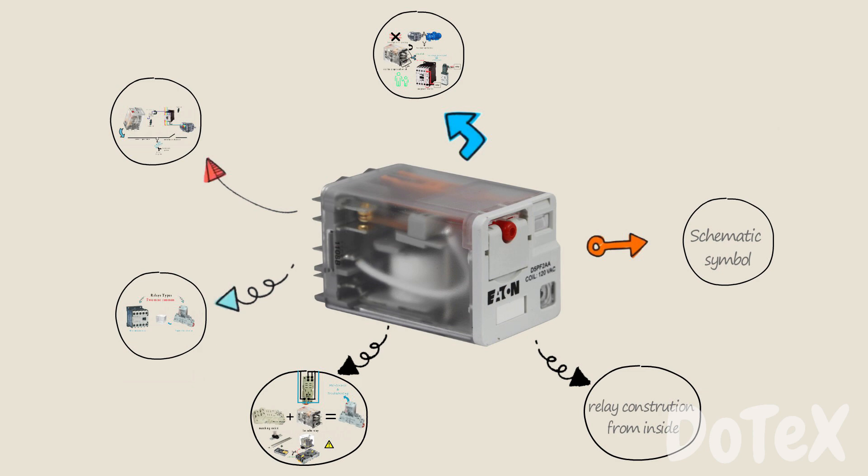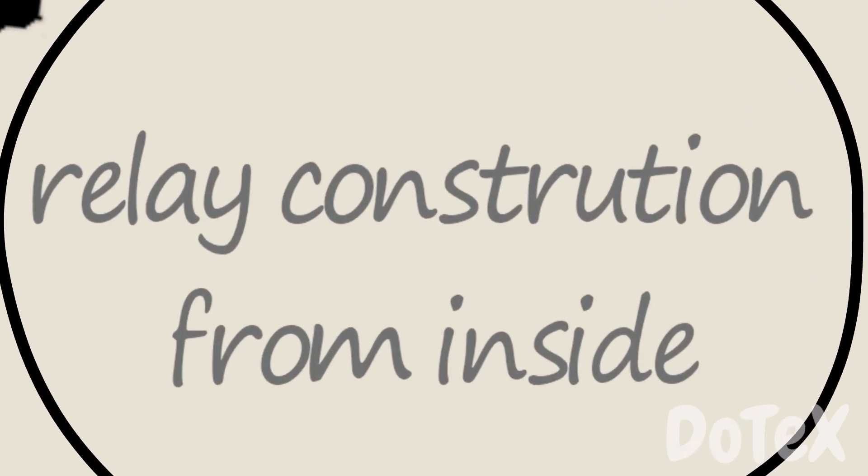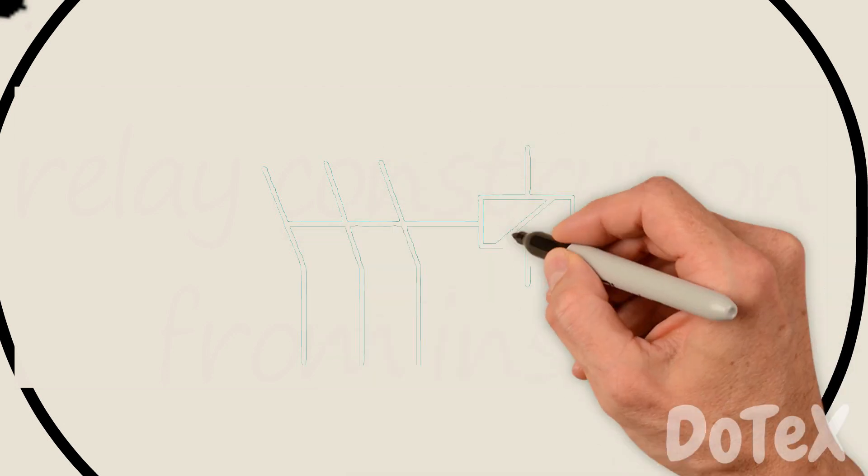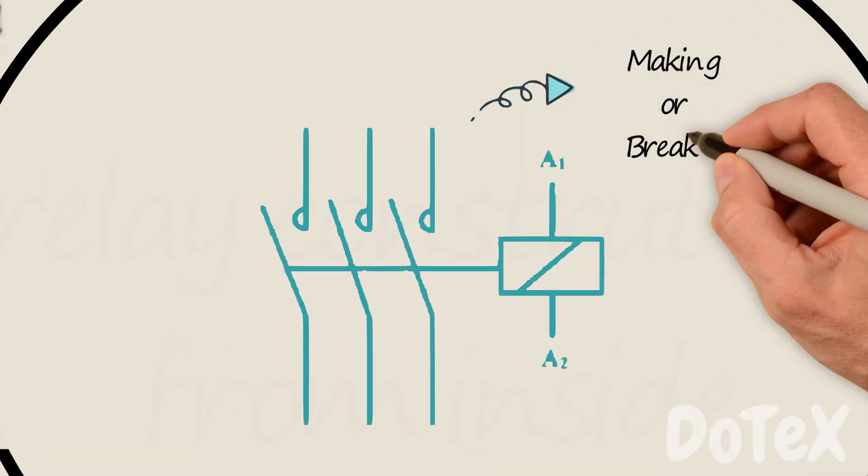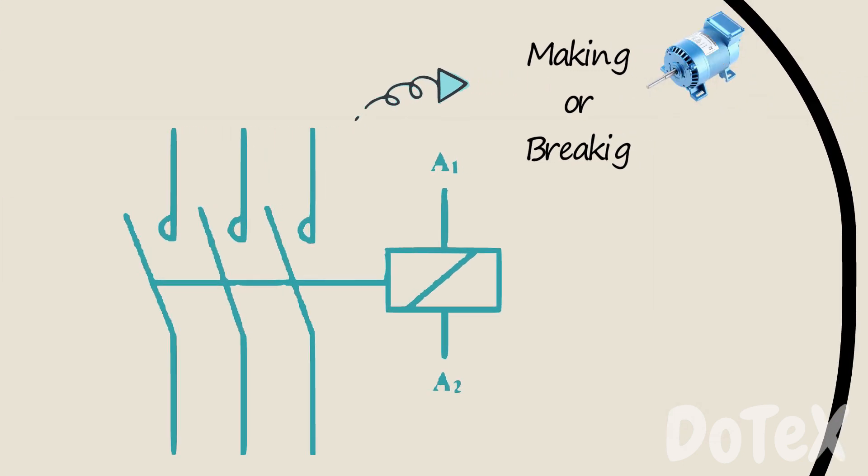Now what about inside construction? As you can see, a relay consists of a set of moving contacts making or breaking a connection to a load like a small motor or a lamp.